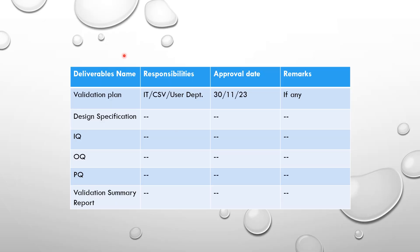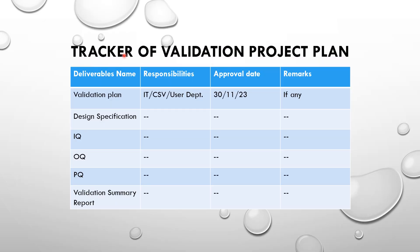Now we will discuss about how the validation project plan tracker is prepared. In the first column, we need to mention the deliverables name which are required as per the different GXP categories — for example, validation plan, design specification, IQ, OQ, PQ, and validation summary report.